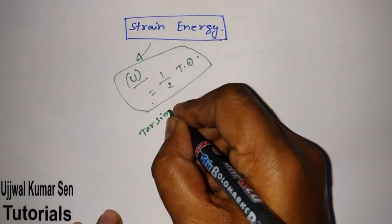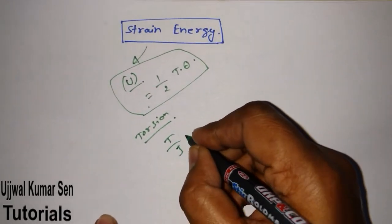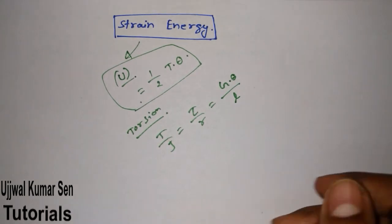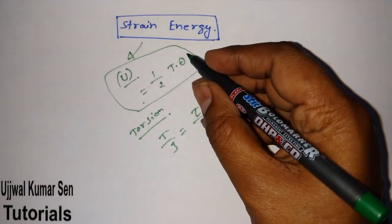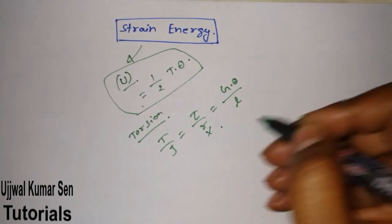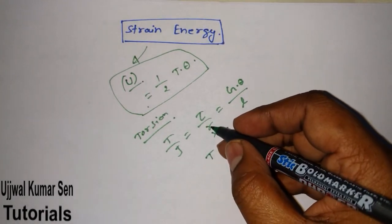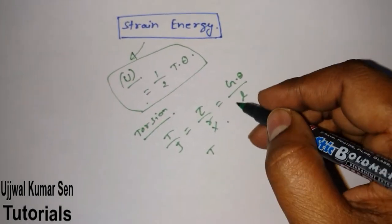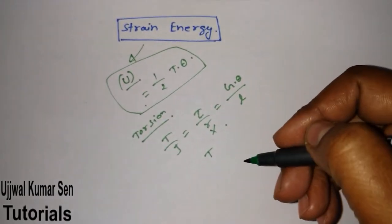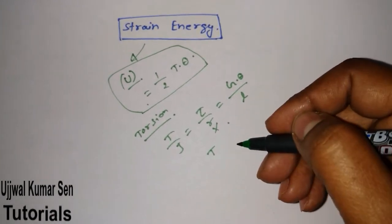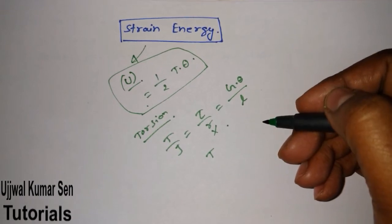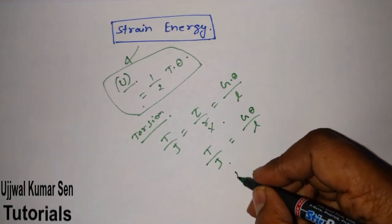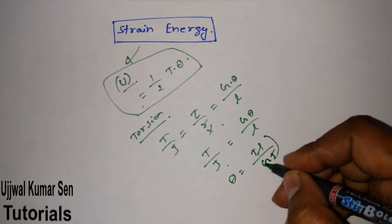The formula we need uses the torsion equation: T/J = τ/r = Gθ/L. From this torsion equation, we can derive theta. If we isolate theta, we get theta is equal to TL divided by GJ.